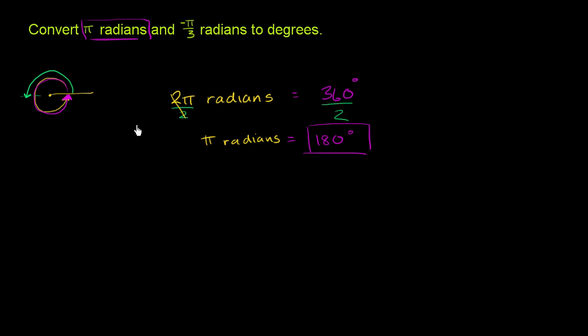So now let's think about the second part of it. If we want to convert negative π over 3 radians, how can we convert that to degrees? What do we get based on this information right over here?